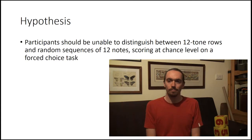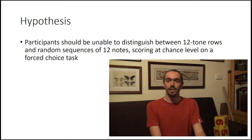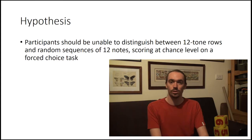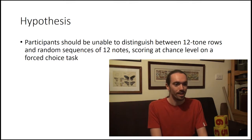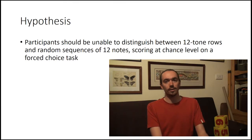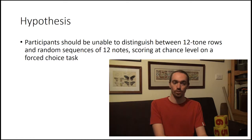So my experiment fills a gap in that no one has tested our perception of random events in the medium of sound before. There have been nice experiments looking at heads and tails, but does this carry over to sound? And does this explain why people think that chance music is less random than serial music? So I want to test the hypothesis that participants should be unable to distinguish between 12-tone rows and random sequences of 12 notes, scoring at chance level on a forced choice task.